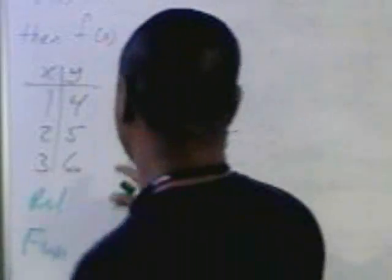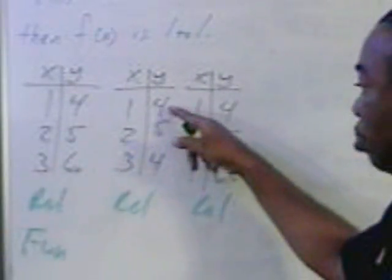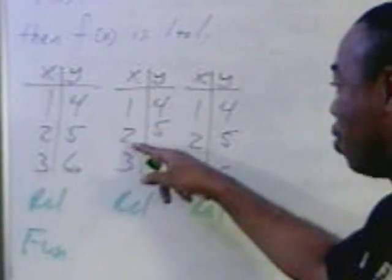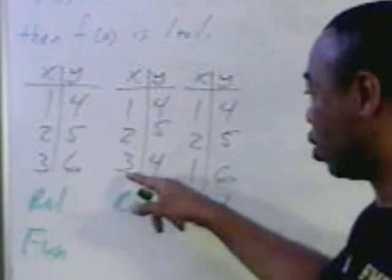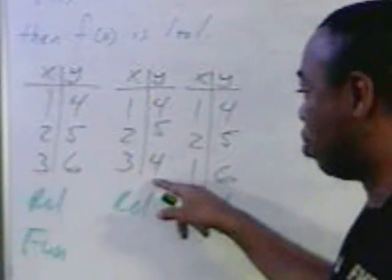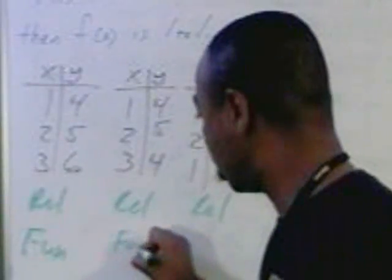The next one. Does one have more than one output? Nope, it's only four. Does two have only one output? Nope, it's only five. And three only has four as an output. This, again, is a function.